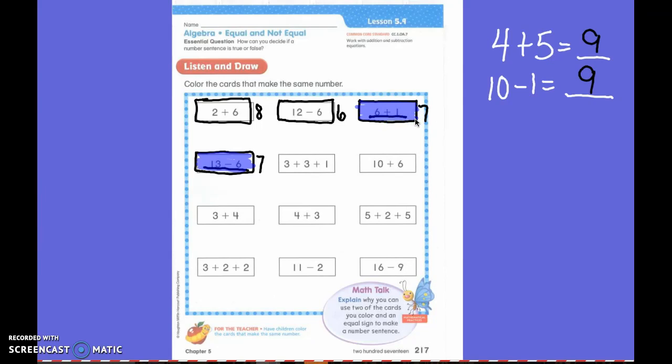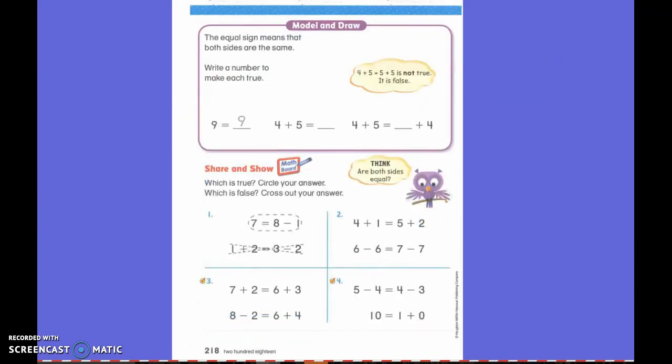Please continue until you have found all of them that equal 7. Just like on the front of the paper, 6 plus 1 equaled the same as 3 plus 4. 6 plus 1 equals 7 and 3 plus 4 equals 7. They were the same. It was true. The equal sign means that both sides are the same.